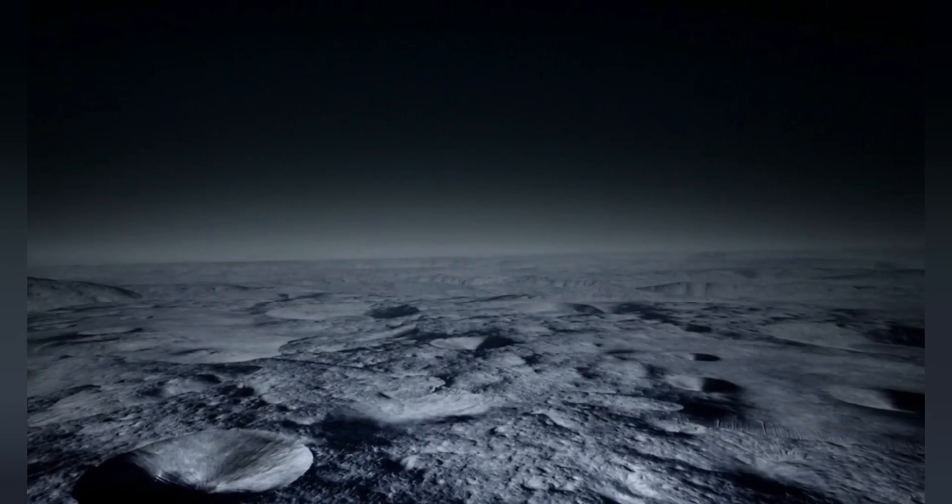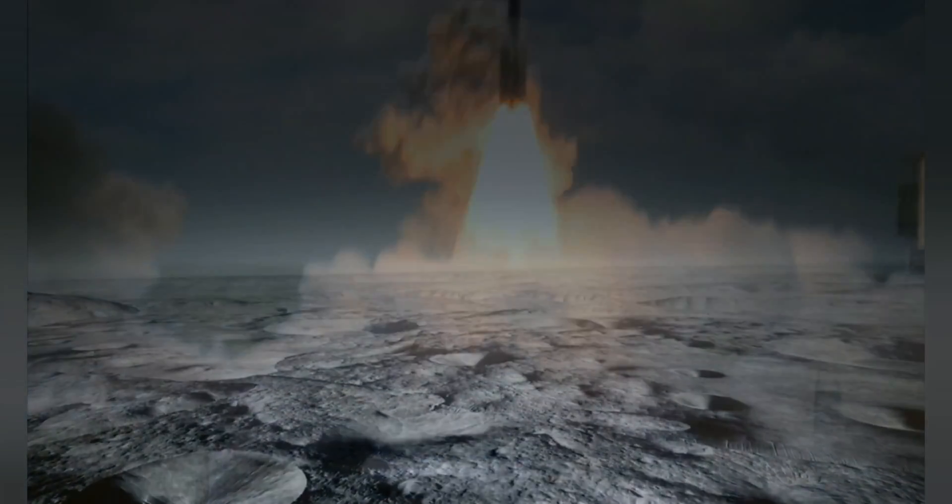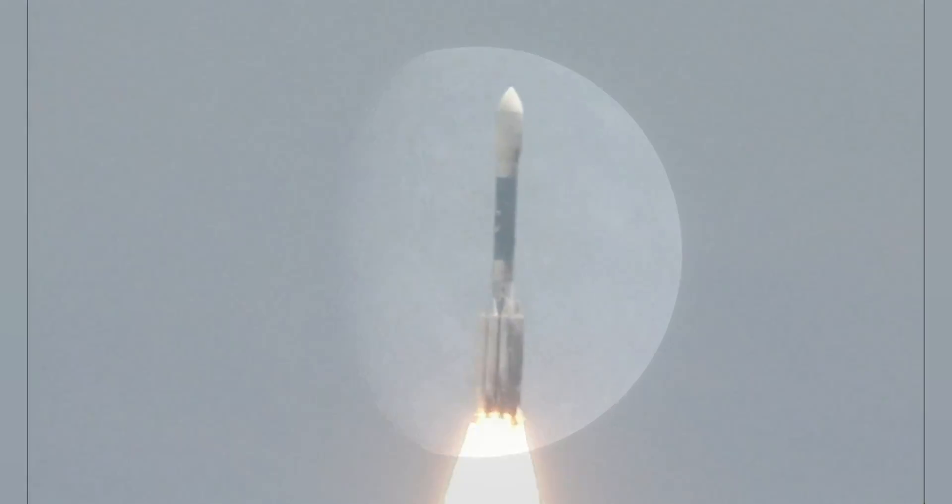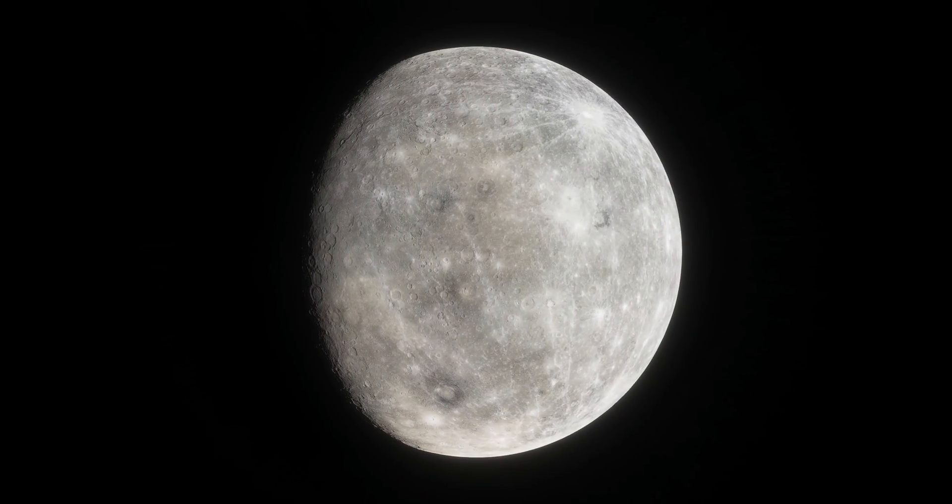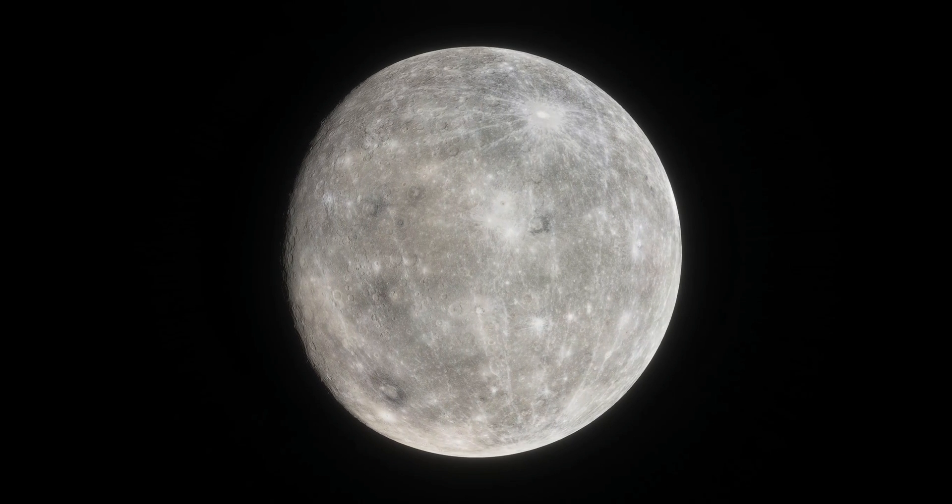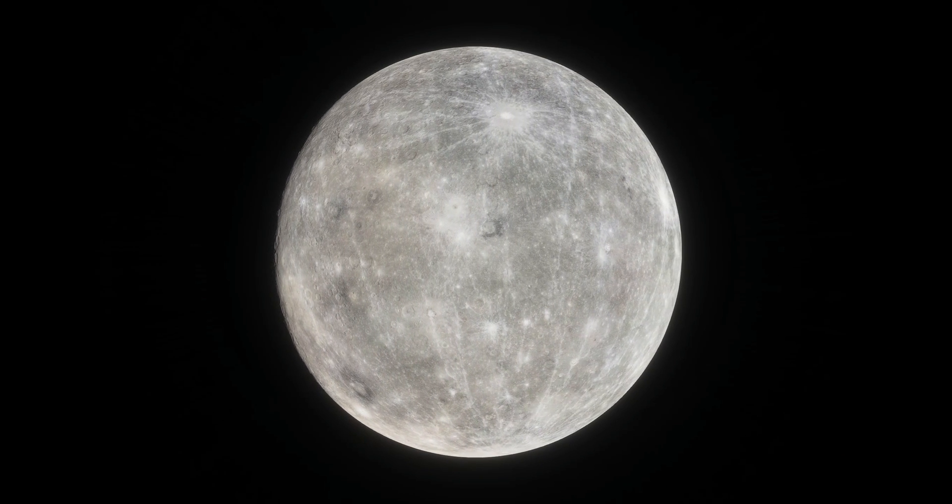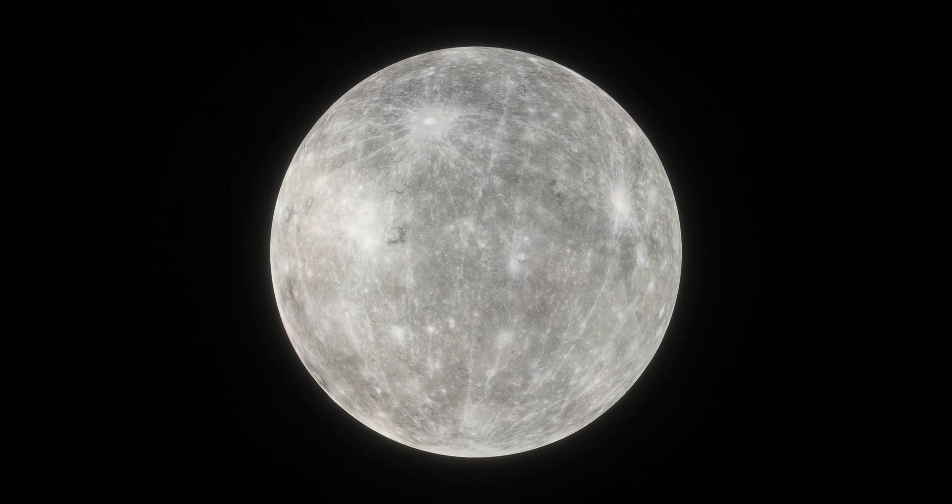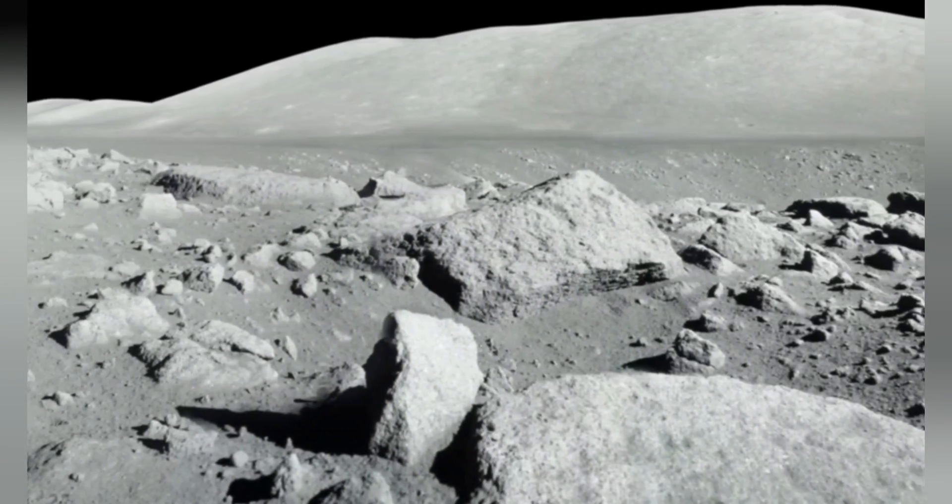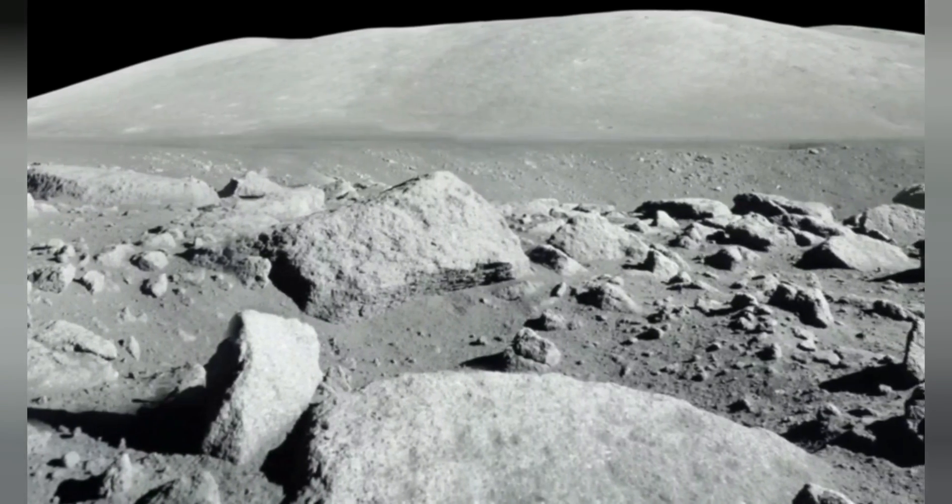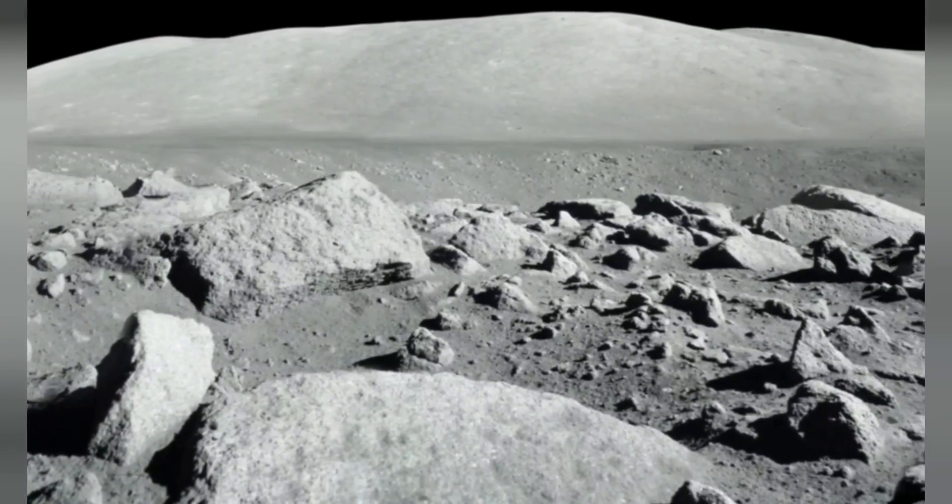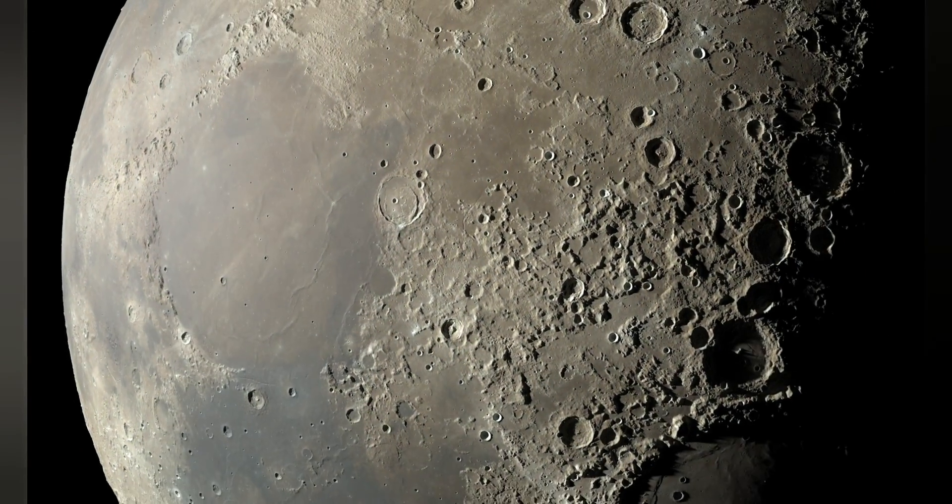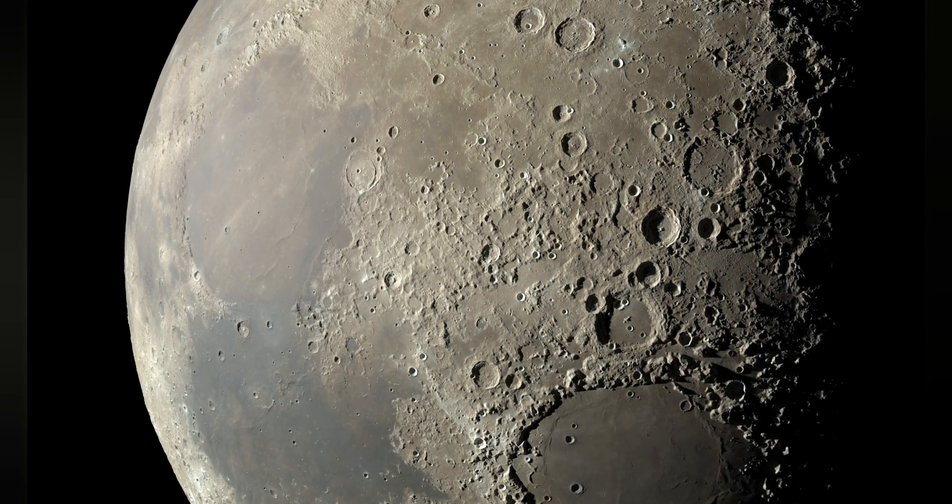Additionally, seismological data from the Apollo missions and more recent lunar missions have revealed that the moon has a surprisingly low level of seismic activity. This has led some scientists to suggest that the moon may have a porous, low-density interior rather than a solid dense core. Observations of the moon's surface features have also contributed to the theory of a hollow moon. Some scientists have pointed to the presence of large circular basins on the moon's surface as evidence of a hollow interior.